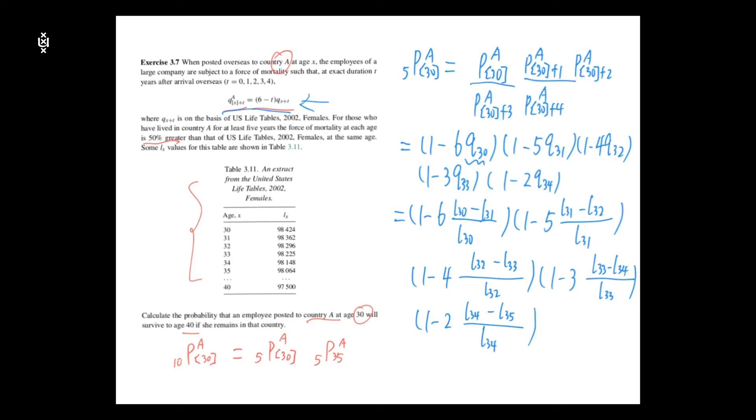And each of the L numbers can be found in the table, and in the end, for this first term, we have 0.98599. So now we have this first part.